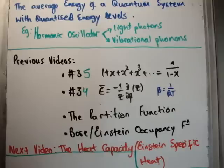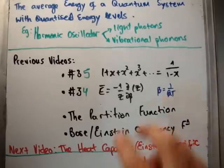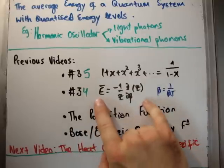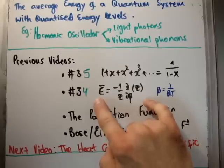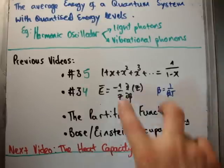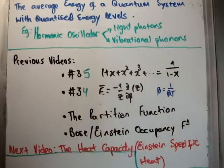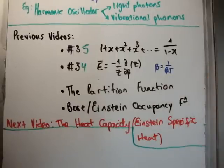In video 34 I showed that using the partition function we can very quickly calculate the average energy. The average energy is minus 1 over Z times the partial derivative of Z with respect to beta, where the thermodynamic beta is 1/kT. This formula makes using the partition function much easier compared with grinding out multiplicities. I hope you've watched my videos on the partition function and on the Bose-Einstein occupancy function.